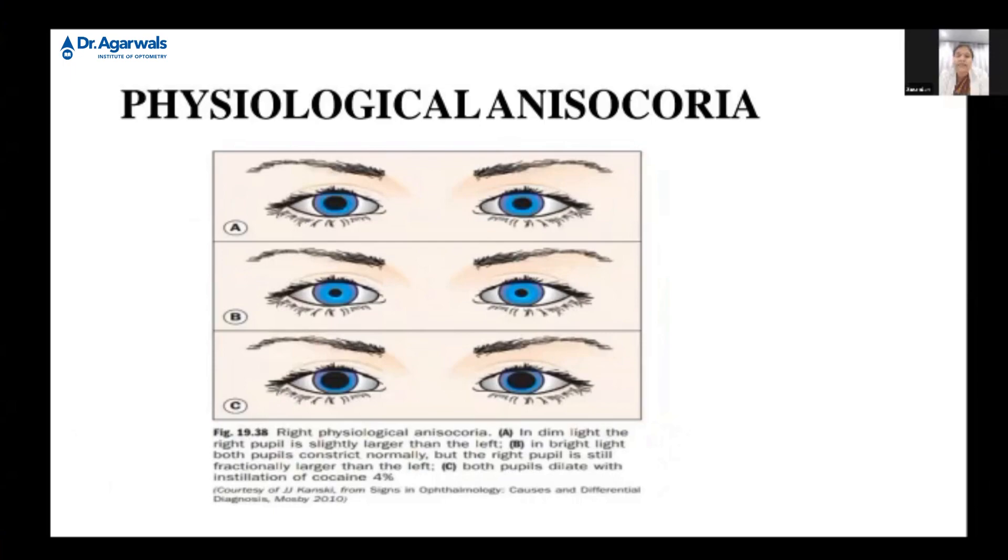So physiological anisocoria: the amount of difference, assume that there is a difference. The right eye, according to this picture, is slightly dilated as compared to the left eye. The amount of difference could be, say, one to two millimeters. Assume that there is a difference of one to two millimeters between the two eyes. When I'm taking them to a dark room and keeping them, or whether I'm bringing them to my well-lit room, the amount of difference between the two eyes will continue to remain as one to two millimeters only. Then it is a physiological anisocoria.